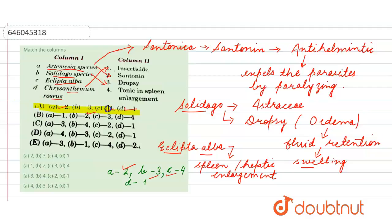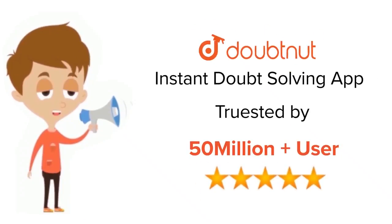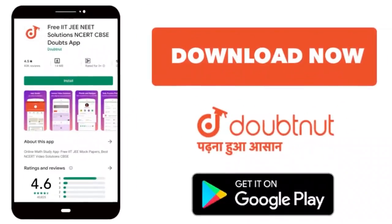Option number A is the right option here. So this is all about this query. Thank you. For class 6-12, IIT-JEE, and NEET level, trusted by more than five crore students, download Doubtnet app today.